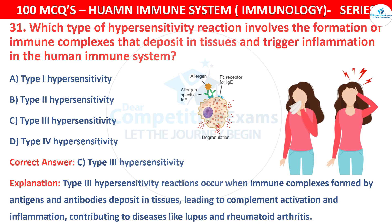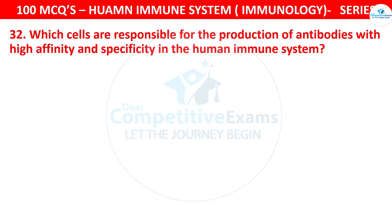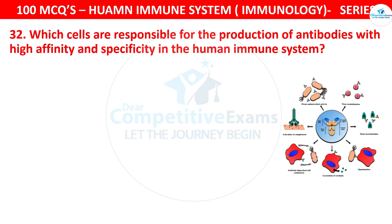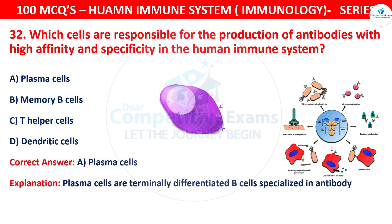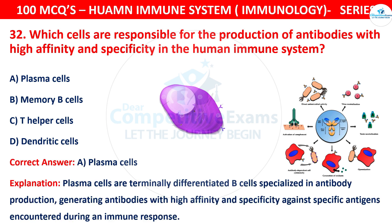Question 32: Which cells are responsible for the production of antibodies with high affinity and specificity in the human immune system? The options are Plasma cells, Memory B cells, T helper cells, or Dendritic cells. The correct answer is A, that is Plasma cells. Plasma cells are terminally differentiated B cells specialized in antibody production, generating antibodies with high affinity and specificity against specific antigens encountered during immune responses.